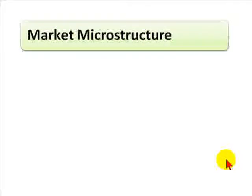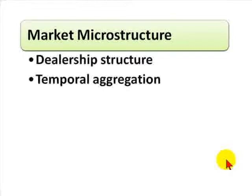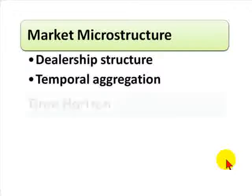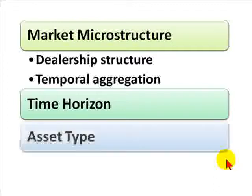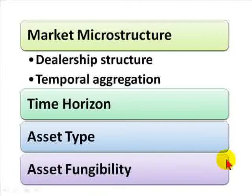We've covered the factors by Culp, and we can summarize them as: market microstructure — which refers to either dealership structure or temporal aggregation — liquidation time horizon, asset type, and asset fungibility. This is David Harper of Bionic Turtle. Thanks for your time.